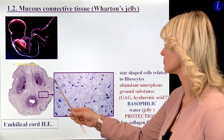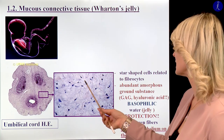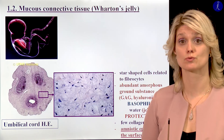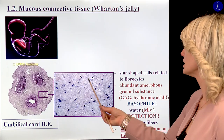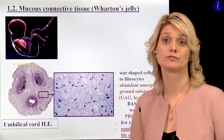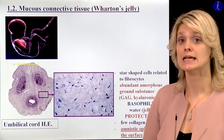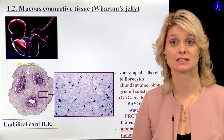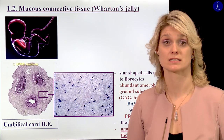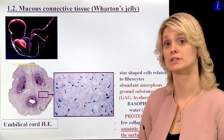If we see a higher magnification of this tissue, we can see star-shaped cells related to fibrocytes. These cells produce the fibers and the ground substance of Wharton's jelly. Within the ground substance, we have a huge amount of glycosaminoglycans and hyaluronic acid. Because of the sulfate groups of these disaccharide units, this will be basophilic with hematoxylin-eosin staining. It binds a lot of water, that's why we have this jelly-like material. This jelly has a really important function in the protection of the vessels within the umbilical cord, protecting them against compression within the cavity of the uterus during pregnancy.